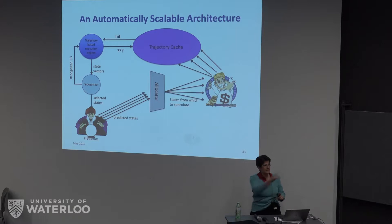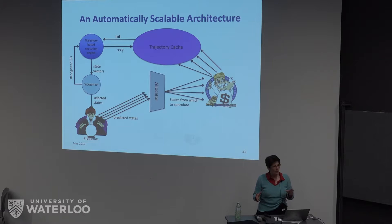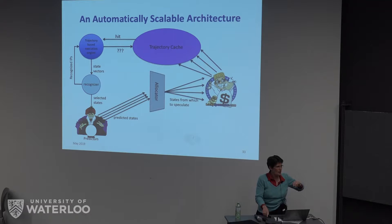Is it a generalization of a branch-taken, branch-not-taken predictor? Sort of. The real difference is that we are making predictions for hundreds of thousands of instructions, as opposed to the tens or twenties that you find in a branch predictor. Is a state vector essentially a core dump? Yes.